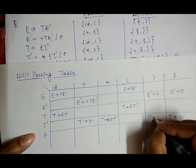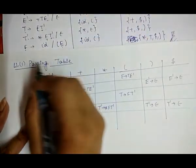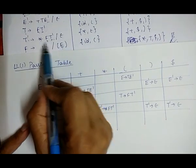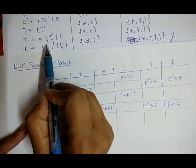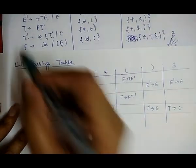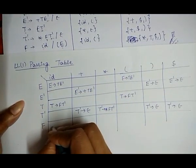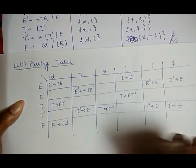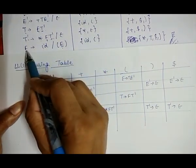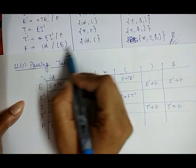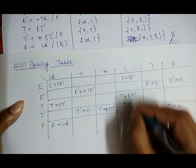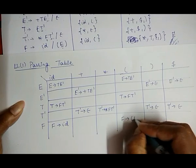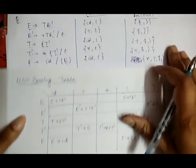For the last grammar F → id | (E) — two choices. For F → id, FIRST is {id}, so under the id column we write F → id. For F → (E), FIRST is {open brace}, so under the open brace column we write F → (E). This completes the construction of the LL1 parsing table.